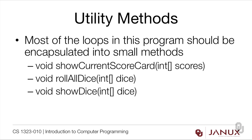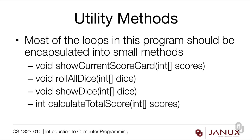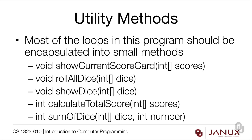We're also going to need a method for calculating the total scores — that takes the scores array and returns an integer. We have to handle the challenge that negative one means the category hasn't been scored and shouldn't count. We also need sumOfDice, which takes an integer dice array and an int number. Notice that these are very small methods — a lot of them are going to be between five and ten lines long. That's actually an ideal size. Don't think that methods have to be big complicated things — smaller, more reusable methods are actually the better ones.